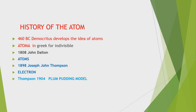In 1898, Joseph John Thomson found that atoms could sometimes eject far smaller negative particles, which he called electrons. He is the founder of the electron.